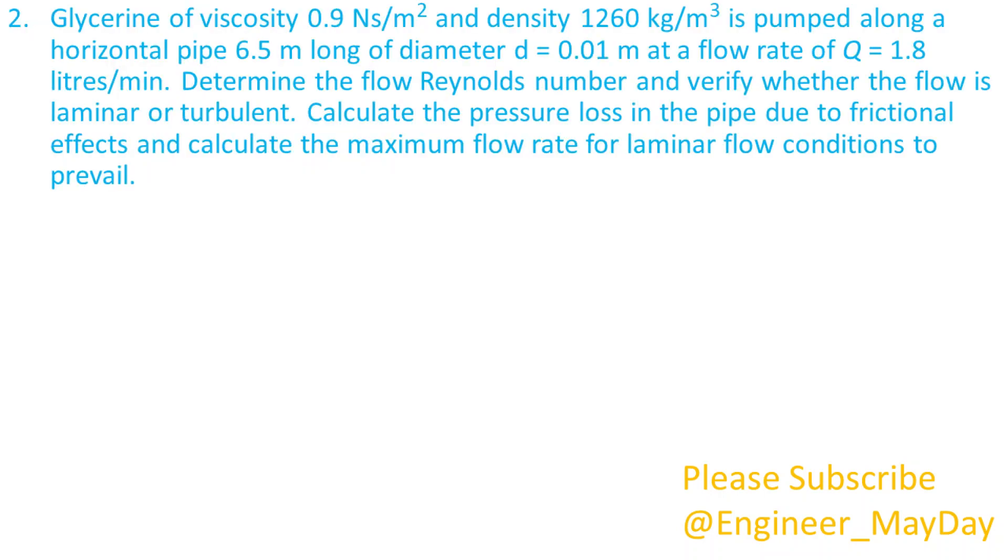Here is a second question. Glycerin of viscosity 0.9 newton second per square meter and density 1260 kilogram per cubic meter is pumped along a horizontal pipe 6.5 meters long of diameter D equals 0.01 meters at a flow rate of Q equals 1.8 liters per minute.